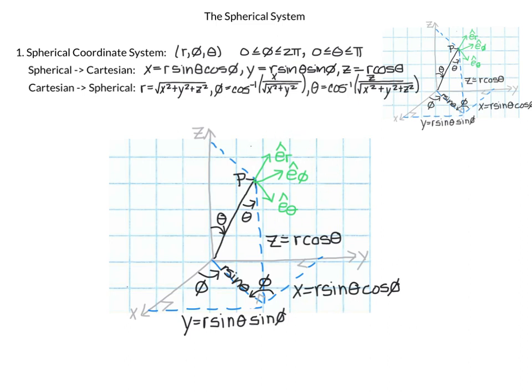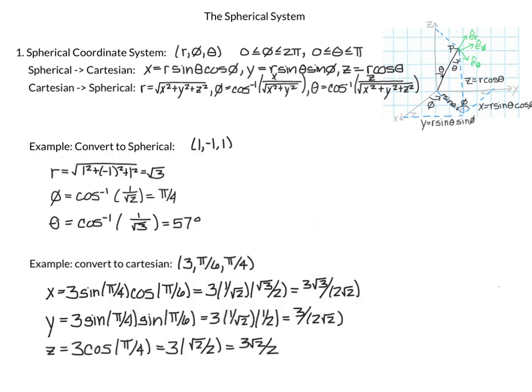First, let's do some quick examples using the conversion formulas. The first example: convert the Cartesian coordinates (1, -1, 1) to spherical coordinates.